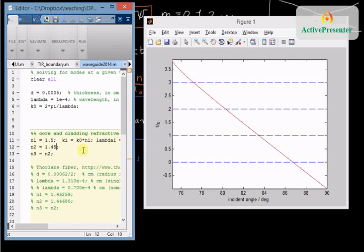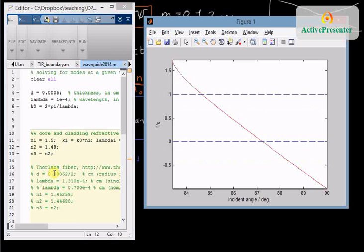If I increase the critical angle, for instance, by making this 1.49, I get a different calculation where I've only got two guided modes in the waveguide.